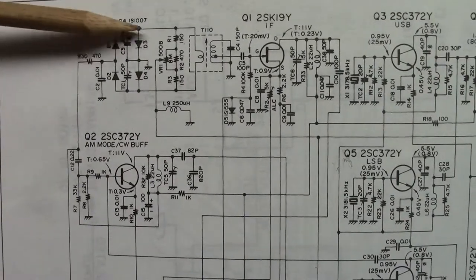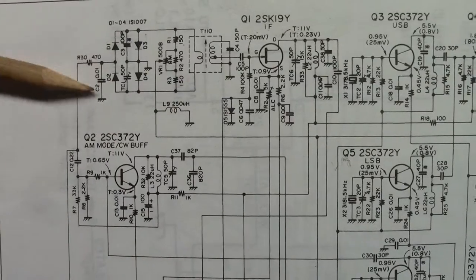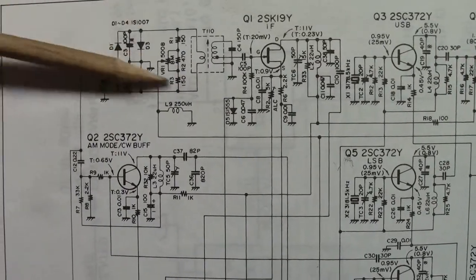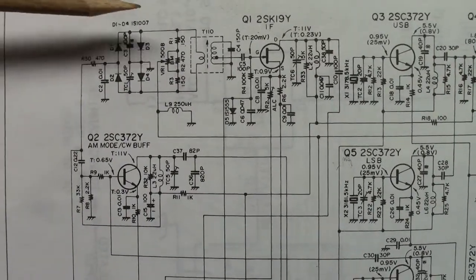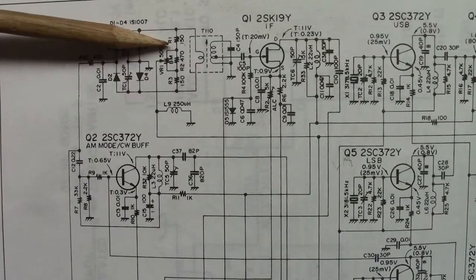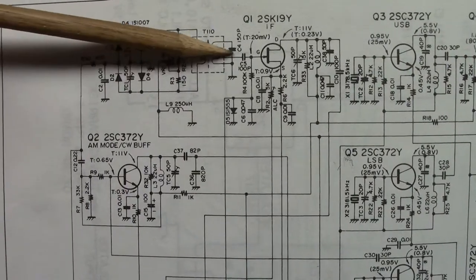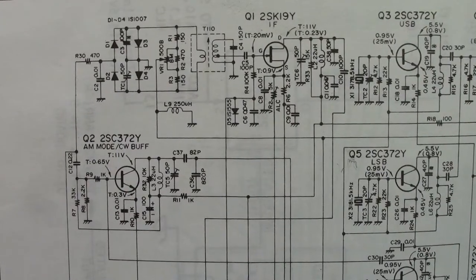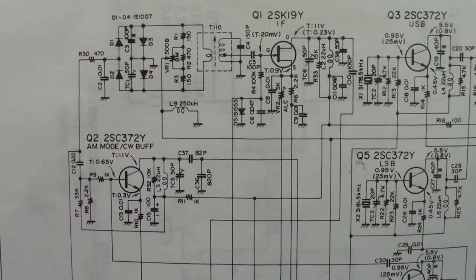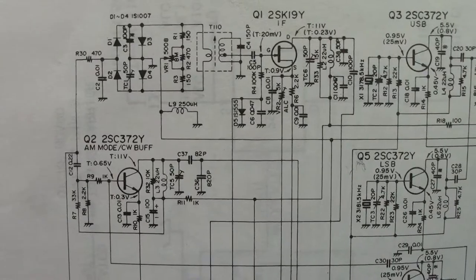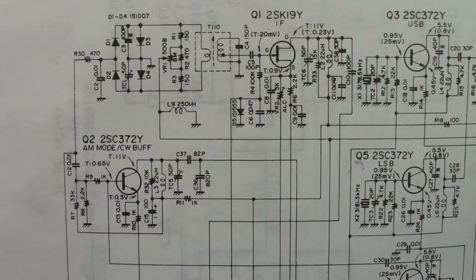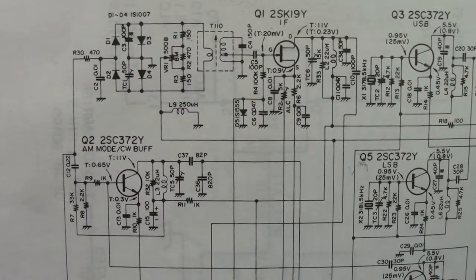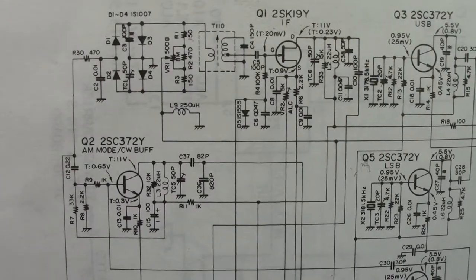And once the signal passes through these diodes, this mixer set up here, the carrier is eliminated and what is sent through forward into the circuit is the two sidebands upper and lower. And they are later filtered out by the filtering board which has filter to filter out either the upper or lower sideband depending on what band you're on.